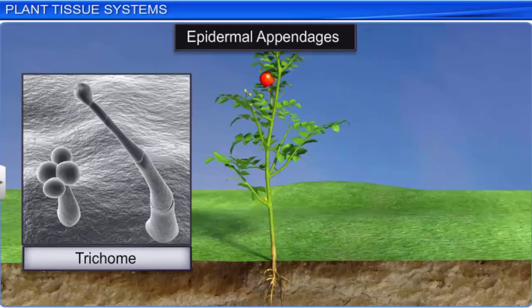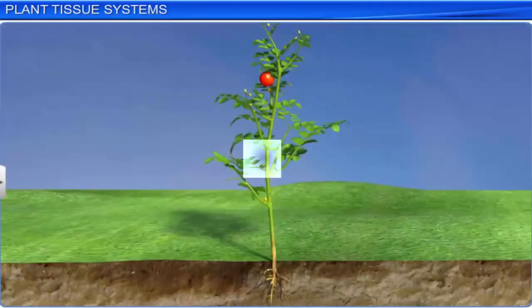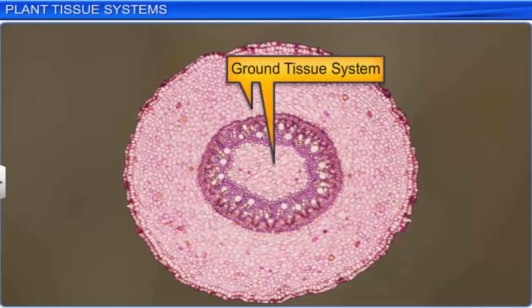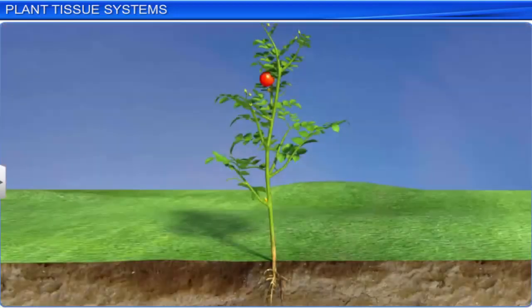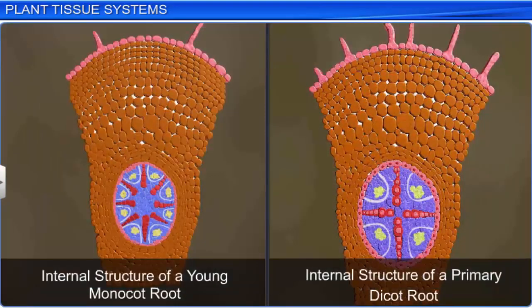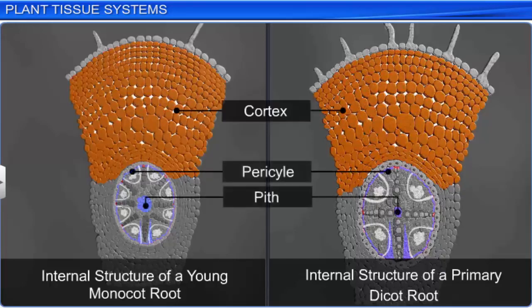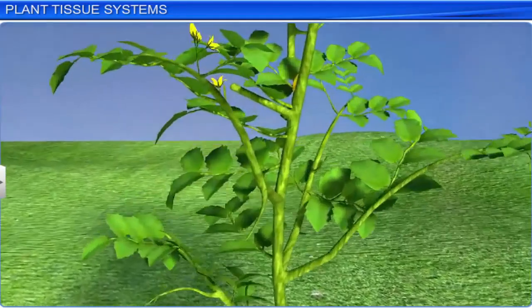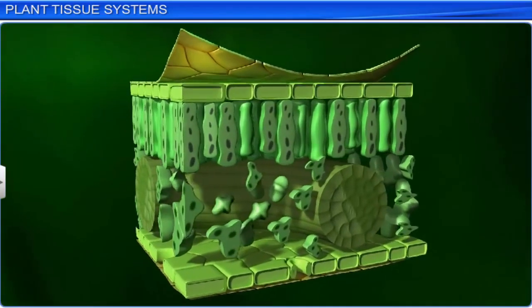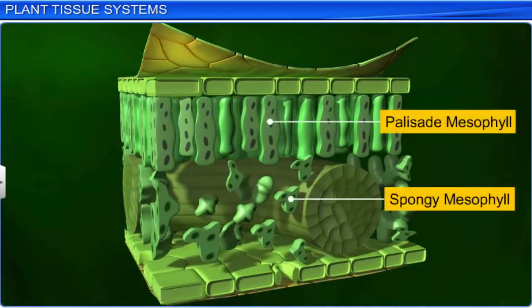The second type of tissue system is the ground tissue system. The ground tissue in primary stems and roots consists of parenchymatous cells found in the cortex, pericycle, pith, and medullary rays. In the leaves, ground tissue is composed of thin-walled, chloroplast-containing cells collectively called mesophyll.